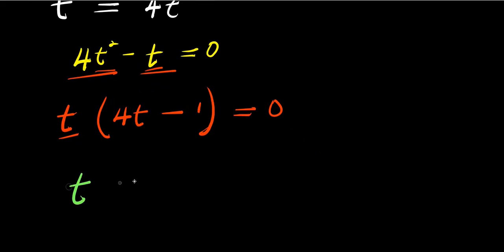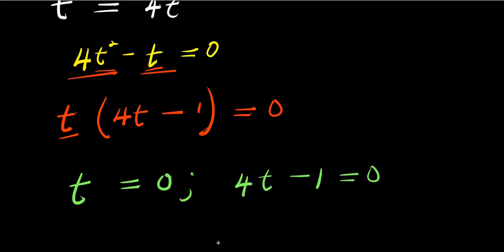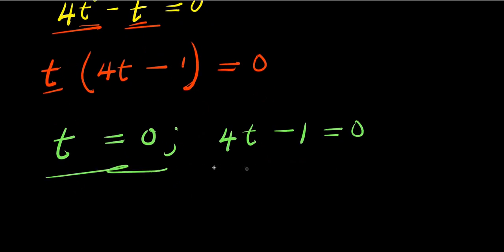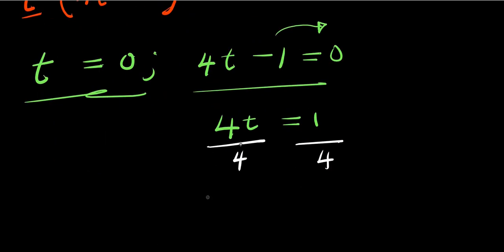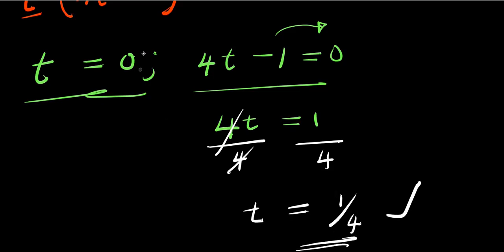So from here, factoring out t gives us t times (4t minus 1) equals zero. From here we have t equals zero, and we have 4t minus 1 equals zero. For the second factor, we move negative 1 over — we have 4t equals 1, divide by 4, so t equals 1 over 4. Using this method we have two solutions: t equals zero and t equals 1 over 4.